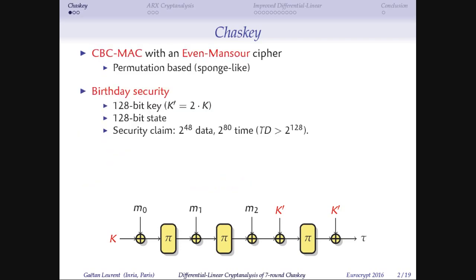In terms of design, Chaskey looks like a permutation-based design. You have this big public permutation pi, you iterate it, and you XOR messages into the state at every round. You can view it as CBC-MAC on top of an Even-Mansour cipher, but it's really just this permutation-based construction. The state size is 128 bits, that's also the size of the key. In terms of security, you accept birthday security, which means any attack should have a time-data product of at least 2^128. The designers limit the data authenticated with a single key to 2^48.